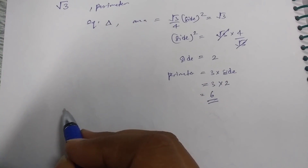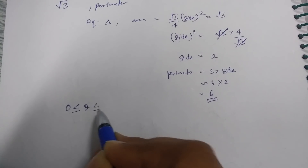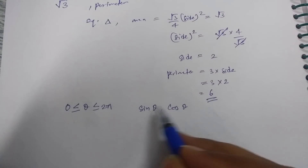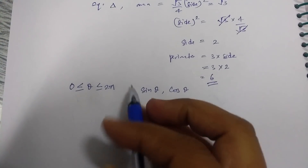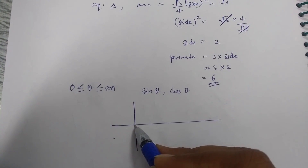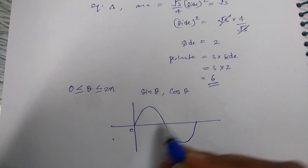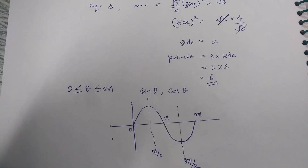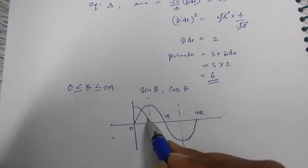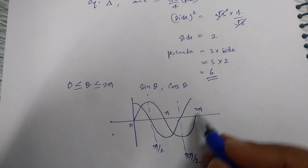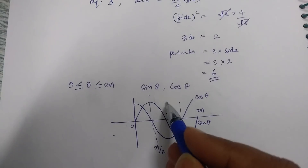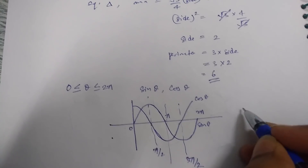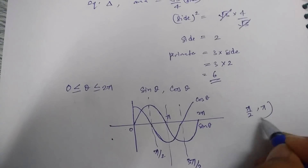Another question: in the region 0 to 2π, two functions sine θ and cos θ are given. In which region are both functions decreasing? If you know the sine graph — it has a maximum at π/2 and minimum at 3π/2 — and cosine starts high and decreases. The region where both are decreasing is π/2 to π, so the correct answer was π/2 to π.